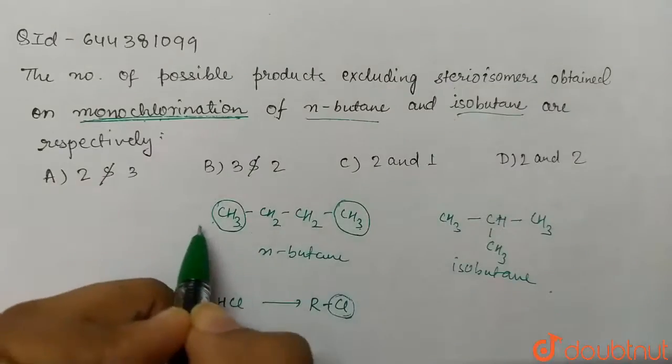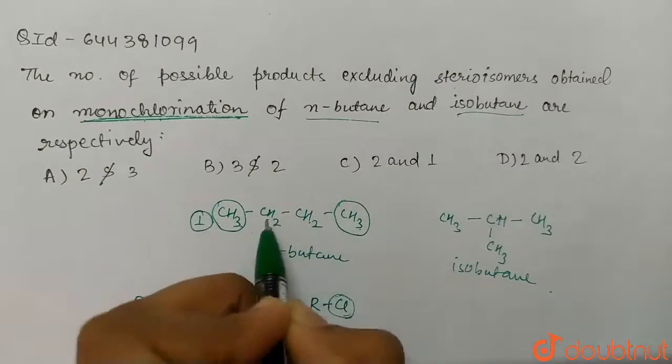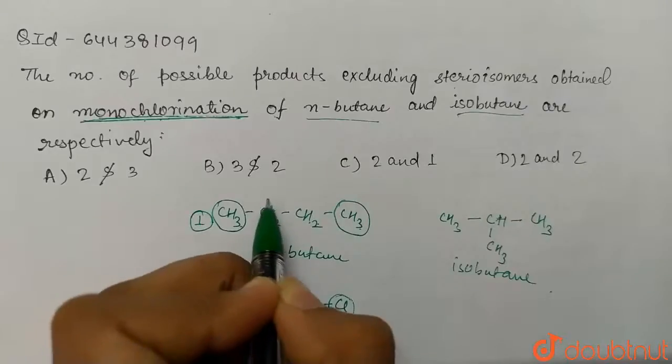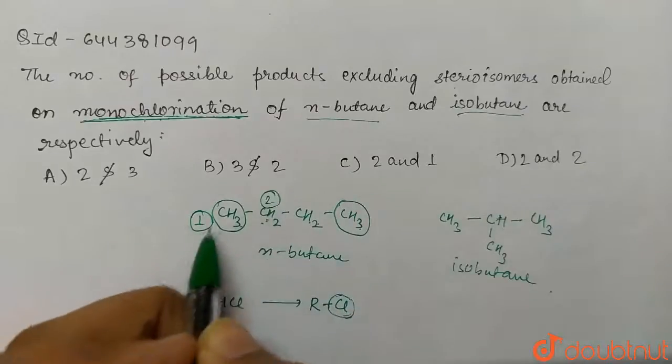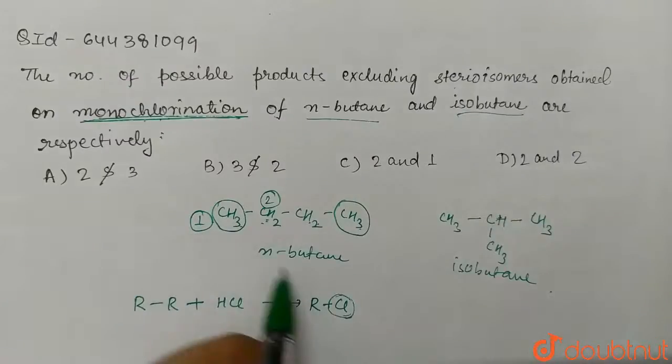And these two carbons have another type of hydrogen, so this is two. The total number of monochlorination products formed in N-butane are two.